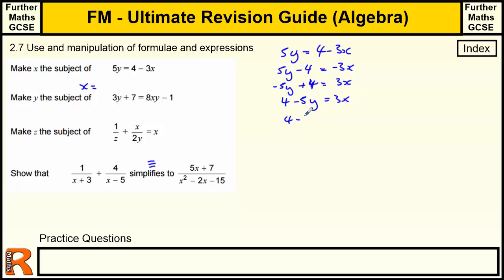And then we just divide by 3, so we get 4 minus 5y over 3 equals x. So we've got x equals 4 minus 5y over 3.